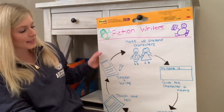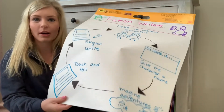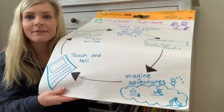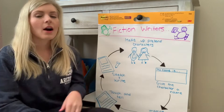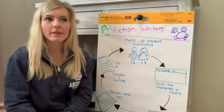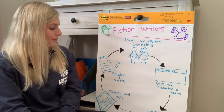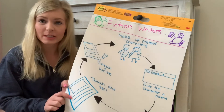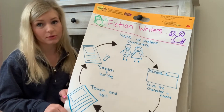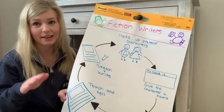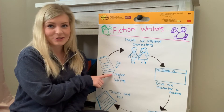The next thing that fiction writers do is they imagine different adventures that their characters go on. They imagine adventures. So Gretchen and Phillip — I'm going to pretend that they are going on an adventure where they get lost in the woods. After you come up with an adventure for your character, you're going to want to touch and tell across your pages to plan your story, just like we've done in our small moments unit and our opinion unit. You are pros at planning across your pages and touching and telling. After you plan, you start to sketch your pictures and then you start to write.